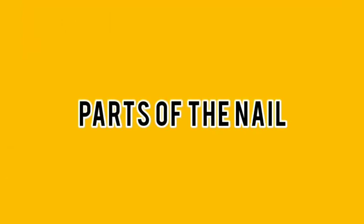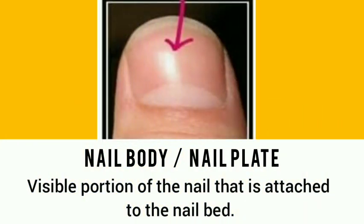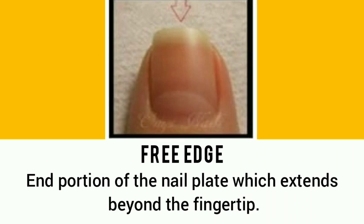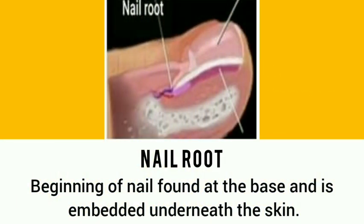Parts of the nail: the nail body or nail plate is the visible portion of the nail that is attached to the nail bed. The free edge is the end portion of the nail plate which extends beyond the fingertip. The nail root is the beginning of the nail, found at the base and embedded underneath the skin.